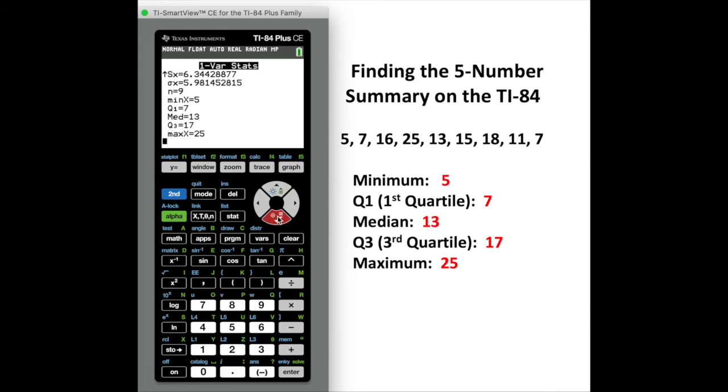So our five number summary will be the five bottom numbers that they give. That N right there is telling me that there were nine numbers in our list. My minimum is 5, my first quartile or Q1 is 7, my median is 13, my third quartile or Q3 is 17, and the maximum is 25.